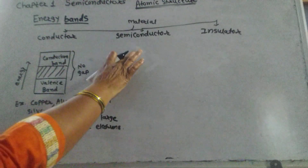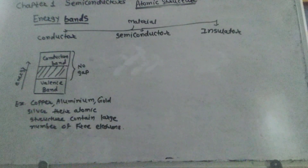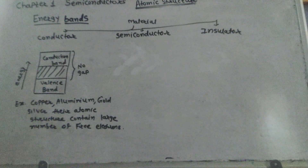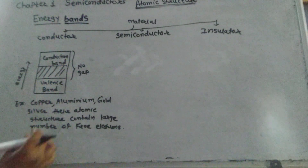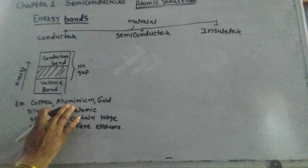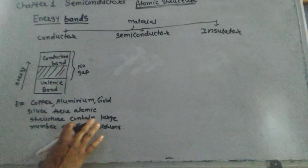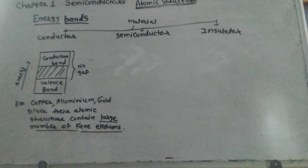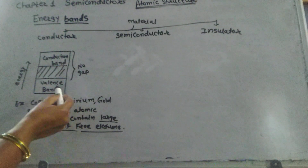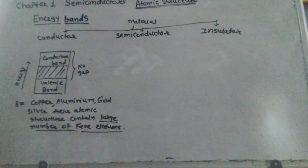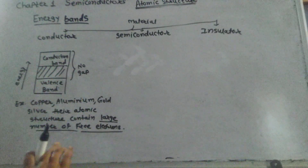There are three types of material: conductor, semiconductor, and insulator. The conductivity of materials depends upon its atomic structure and the energy gap between the valence band and the conduction band. Conductors, for example copper, aluminum, gold, and silver, contain a large number of free electrons in their atomic structure. There is no energy gap between the valence band and the conduction band in conductors, so as soon as voltage is applied, electrons move through the conductor.